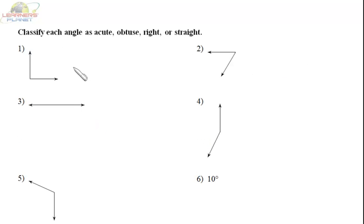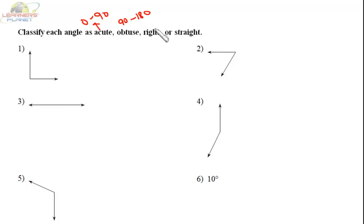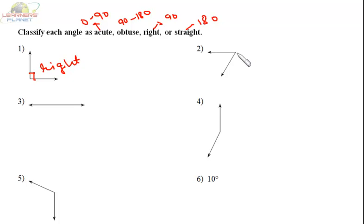In this question we have to classify the angles as acute, obtuse, right, or straight. Acute angles lie between 0 and 90 degrees. Obtuse is from 90 to 180. Right is exactly 90 and straight is 180. Here we can see this is a right angle — 90 degrees — or we can say this ray is perpendicular to this ray. Over here, drawing a straight line, this complete angle is 90 degrees but this angle is less than 90, so we can call it an acute angle.